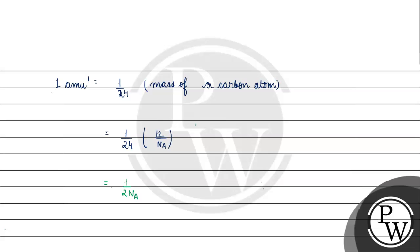Looking at this, what is 1 amu'? It is equal to 1 upon Na'. But here Na' — what is its value? We have 2 into Avogadro's number. So we can make this conclusion: Na' is twice the Avogadro's number.